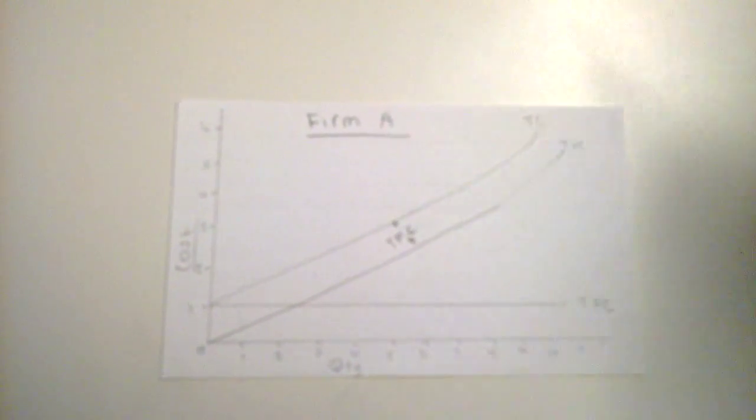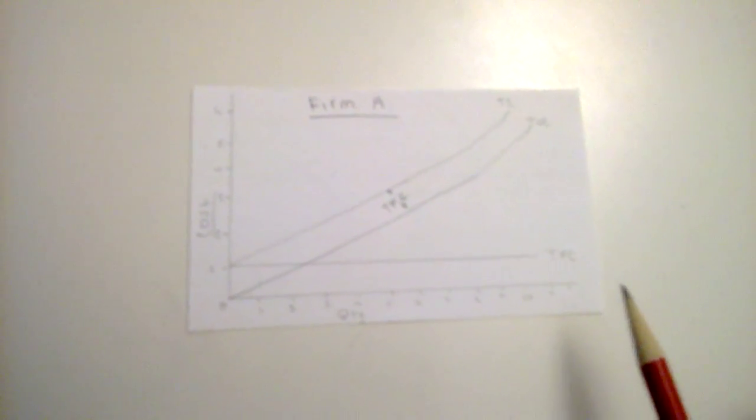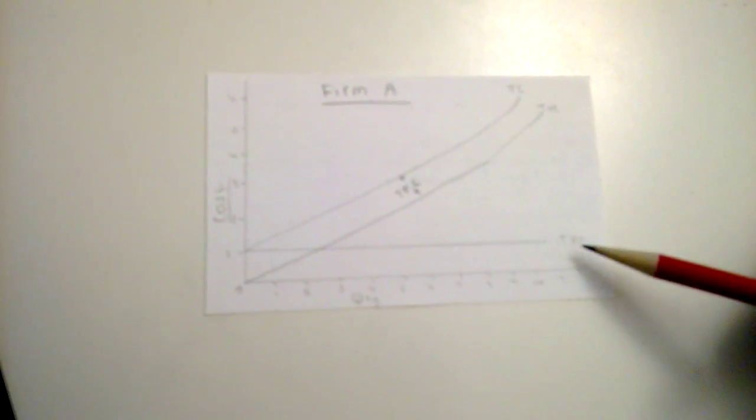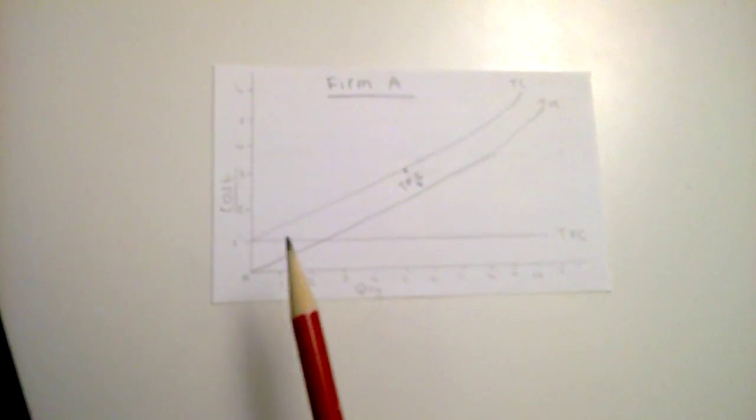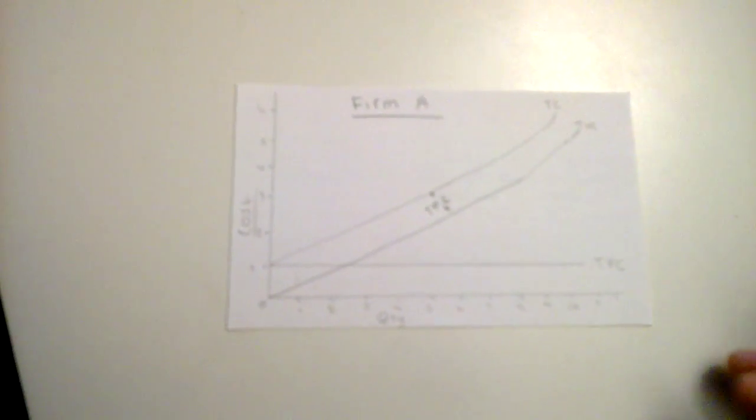The total fixed cost is associated with the firm's plant and it does not change with the level of production. What that means is that no matter how much a firm produces, the total fixed cost is fixed, and that is why it is a horizontal line on the graph. It does not change.